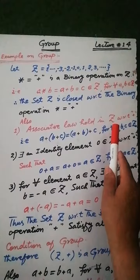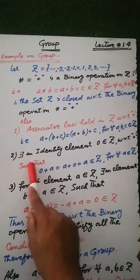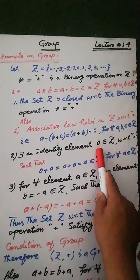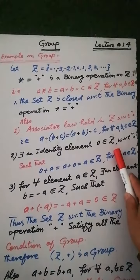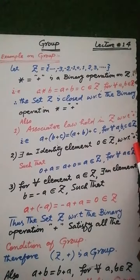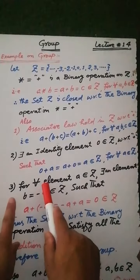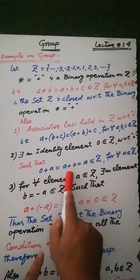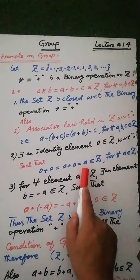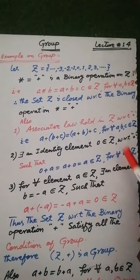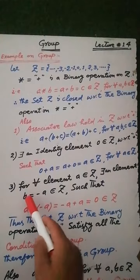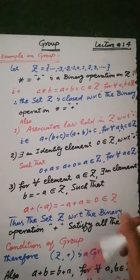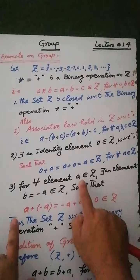There exists an identity element zero in the set Z of all integers with respect to the binary operation addition, such that zero plus a is equal to a plus zero is equal to a, for any integer a in the set Z of all integers.